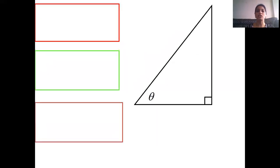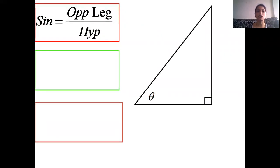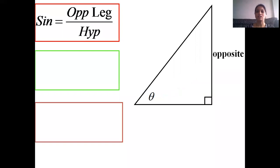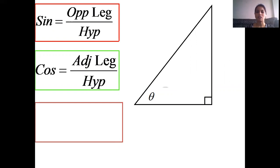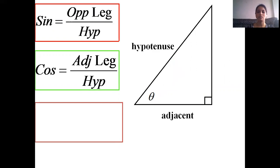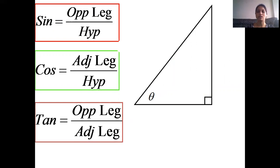These three trigonometric functions in relation to the right angle are displayed in the figure. Sine theta is equal to opposite side divided by hypotenuse. Cos theta is equal to adjacent side divided by hypotenuse. Tan theta is equal to opposite side divided by adjacent side.